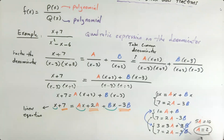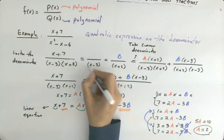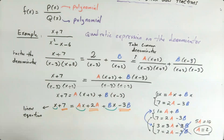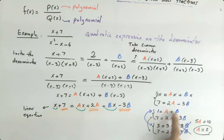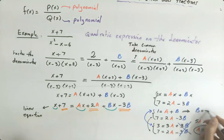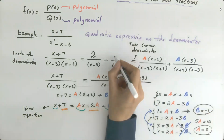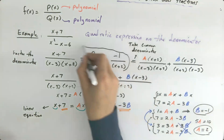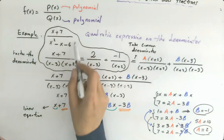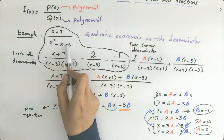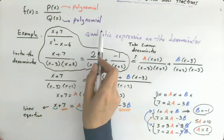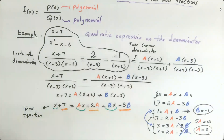Since A equals 2, substituting back into A plus B equals 1 gives B equals negative 1. So the final answer is: the fraction x plus 7 divided by the quadratic denominator is written as partial fractions with A equals 2 and B equals negative 1.